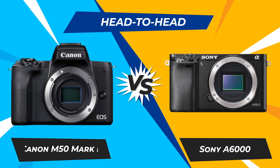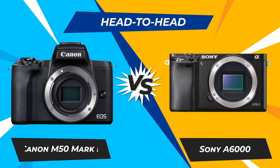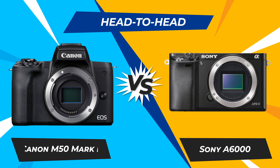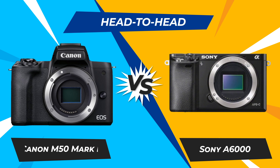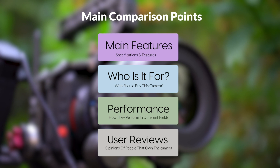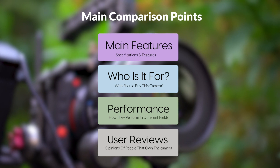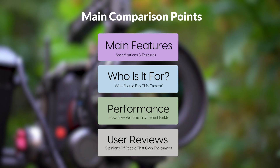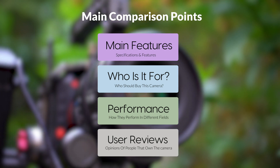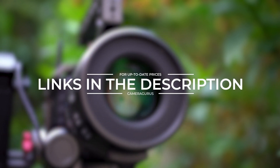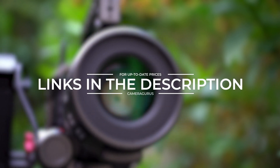Today, we are going to compare two popular cameras: the Canon M50 Mark II and the Sony A6000. We are going to take a look at their features, who they are for, how they perform in various use cases, user experiences, and which one is the right one for you. Links to both cameras will be listed in the description below. Let's get started.